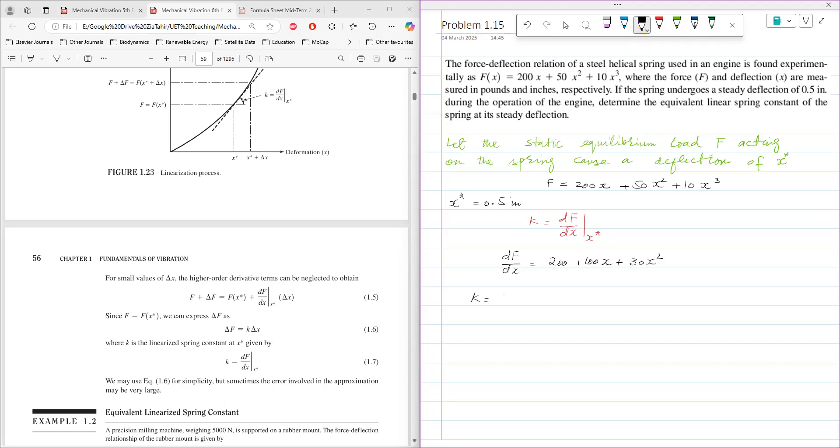Then k = df/dx at x*, which is 200 + 100(0.5) + 30(0.5)². After solving using the value of x* = 0.5, the equivalent linear spring stiffness comes out to 257.5 pounds per inch.